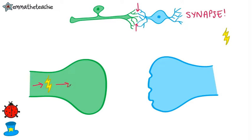As the electrical impulse reaches the end of one neuron, it causes chemical messengers, also known as neurotransmitters, to be released and diffuse across the gap. They attach to receptors on the next neuron. This causes a new electrical impulse to be triggered, and it will then travel across that neuron as well.